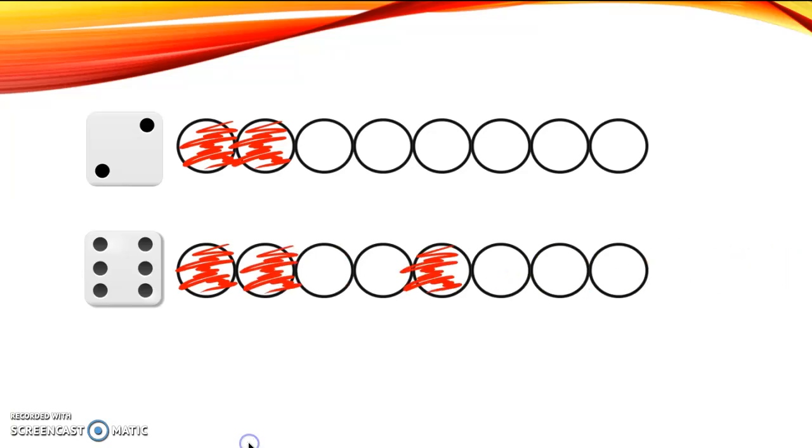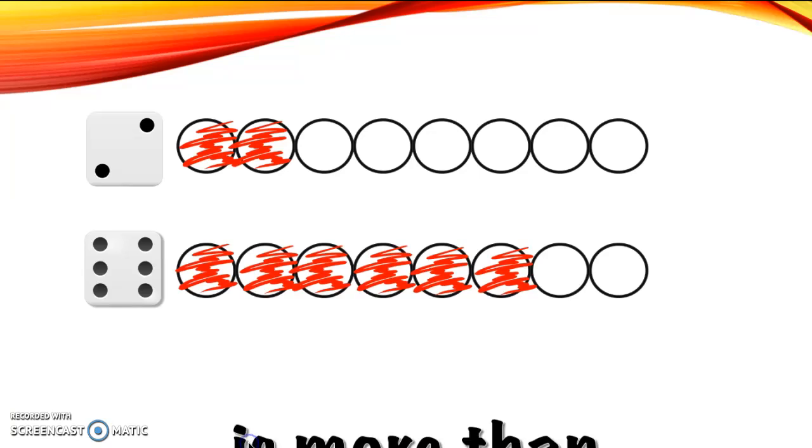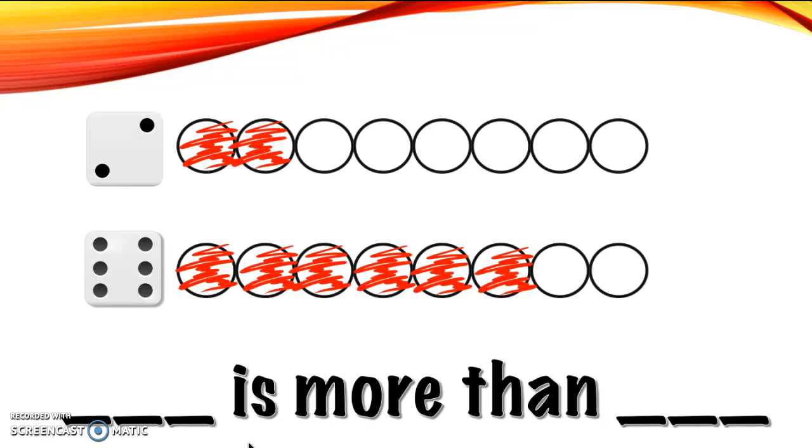And how many am I going to color in for six? You got that right. Six. Go ahead and count with me. One, two, three, four, five, six. Oh, I hope that you can tell which one is longer automatically. Man, I love using lengths because you can see it so quickly. Alright, let's see if we can finish this sentence. Blank is more than blank. What would you fill in for that sentence, friend? Great job. Six is more than two. How did you know? Yeah, look how short two is compared to, whoa, six. Look how long six is.